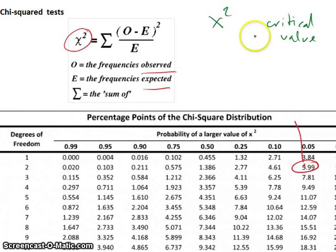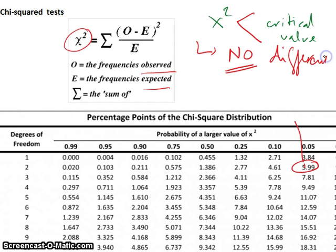If chi-square is smaller than the critical value, then you will conclude that there is no difference between your observed and your expected value.